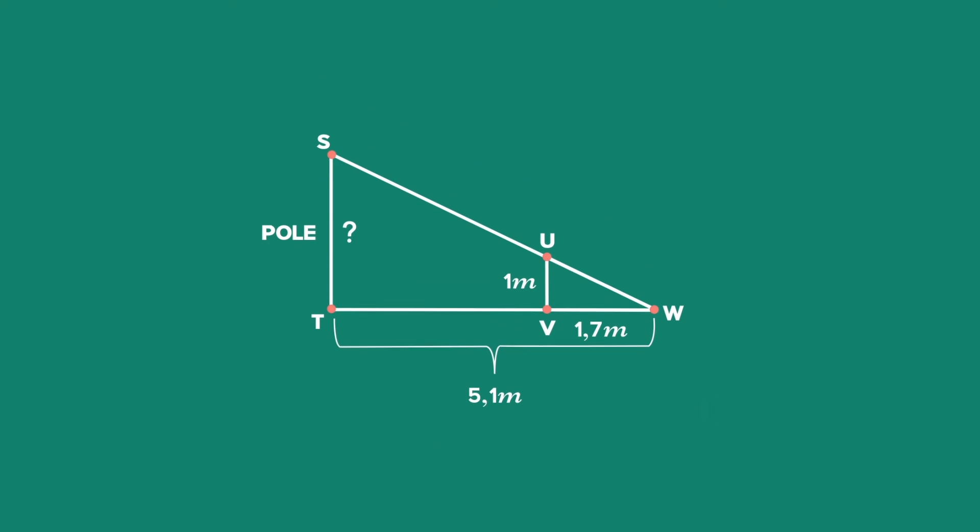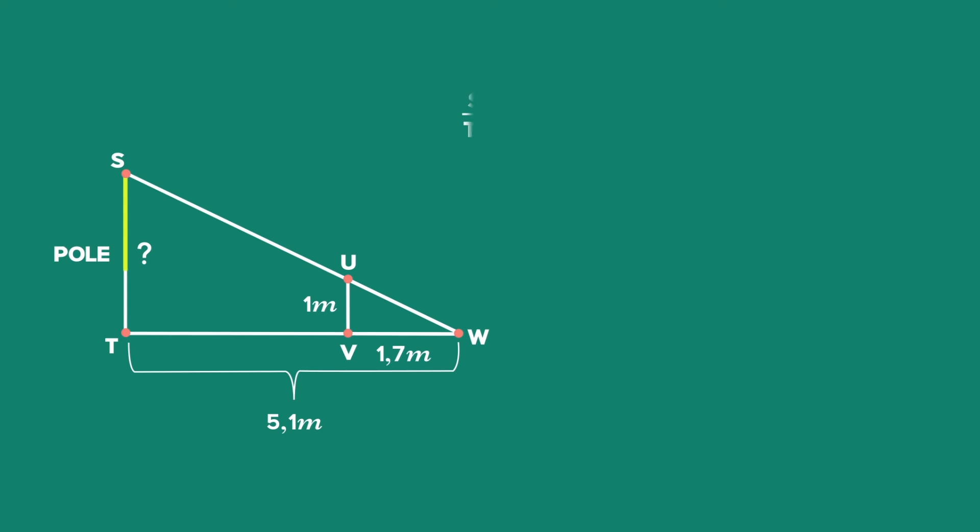Using similarity, we can now calculate the length of side ST as the sides of the two triangles are in proportion. Side ST over TW is equal to side UV over VW, since triangle STW is similar to triangle UVW.